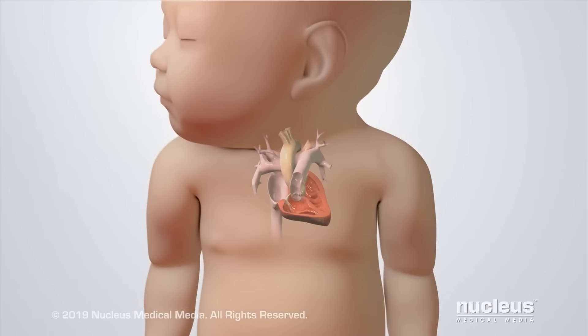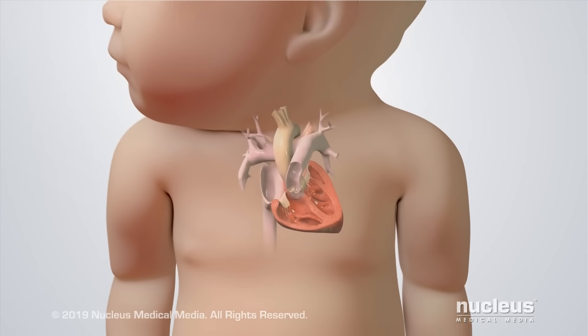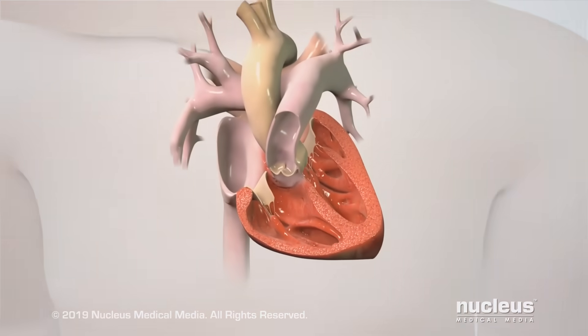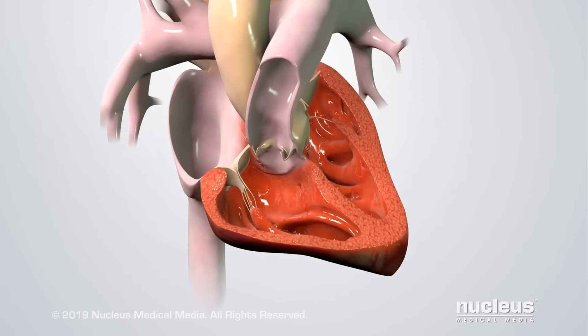Tetralogy of Fallot is a birth defect that changes normal blood flow through a baby's heart.